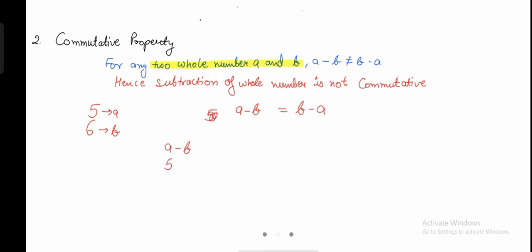Doing A minus B: 5 minus 6, my answer will be negative 1. Now in the next scenario, I'm going to do B minus A. B is 6, A is 5, so my answer is positive 1. Is positive 1 and negative 1 the same thing? No — one has a negative sign and one has a positive sign, so they are completely opposite to each other.